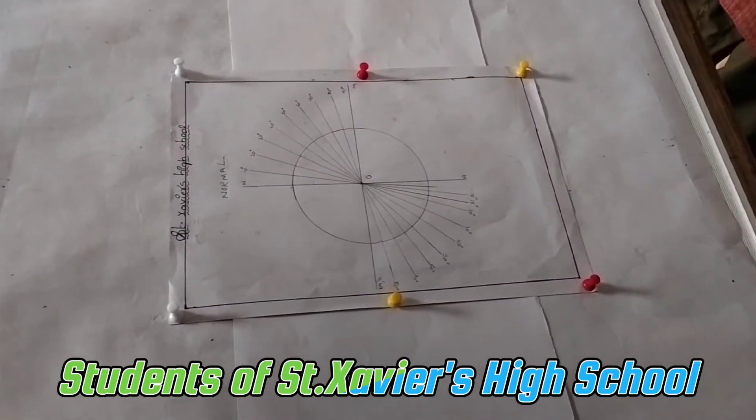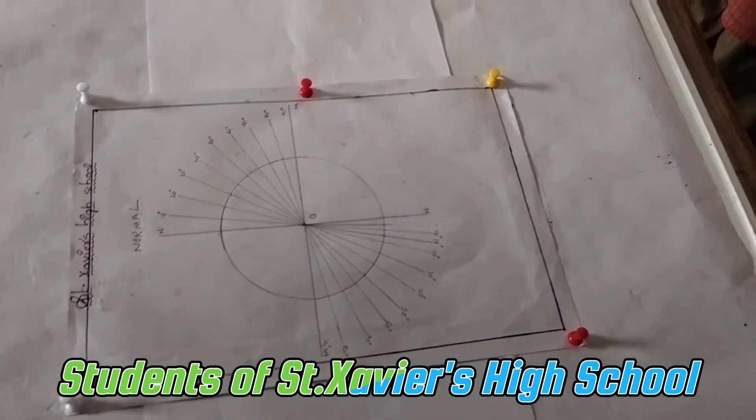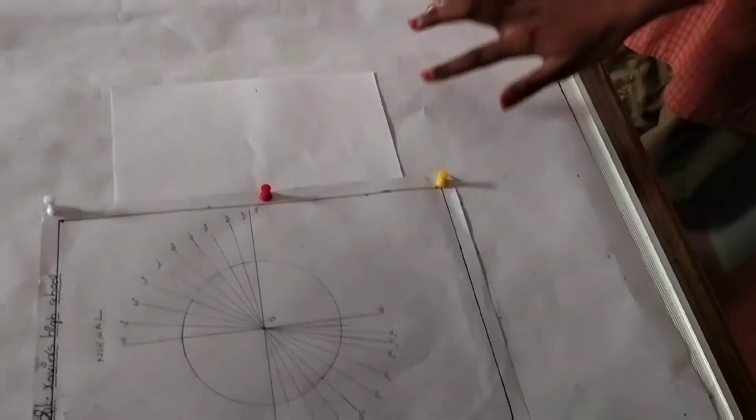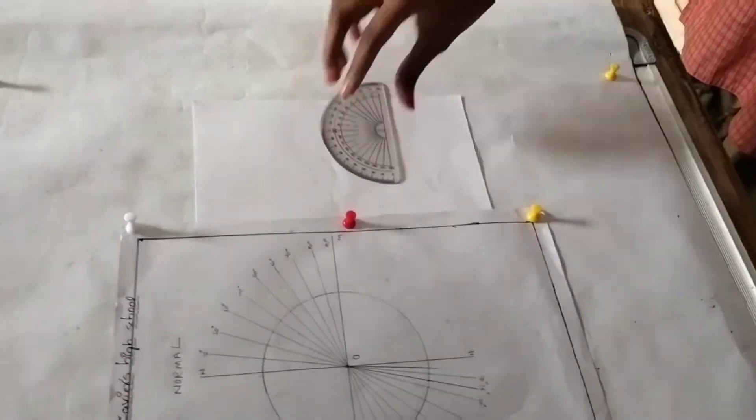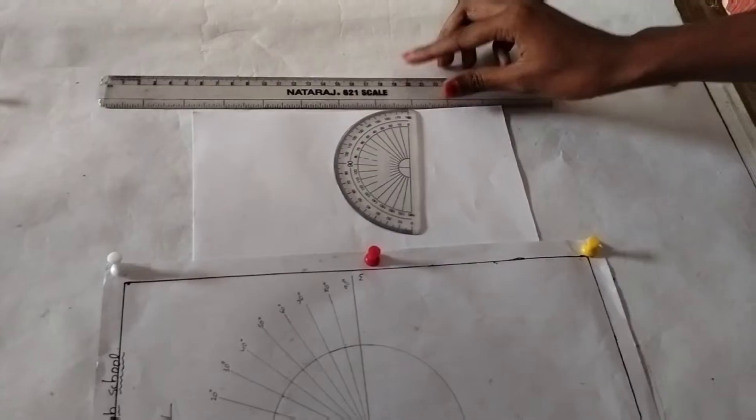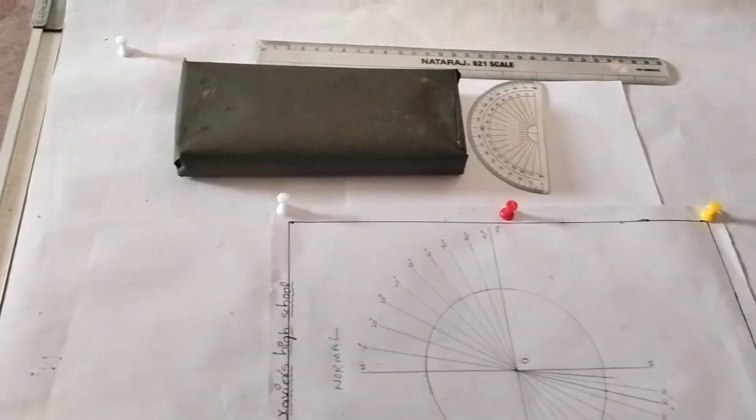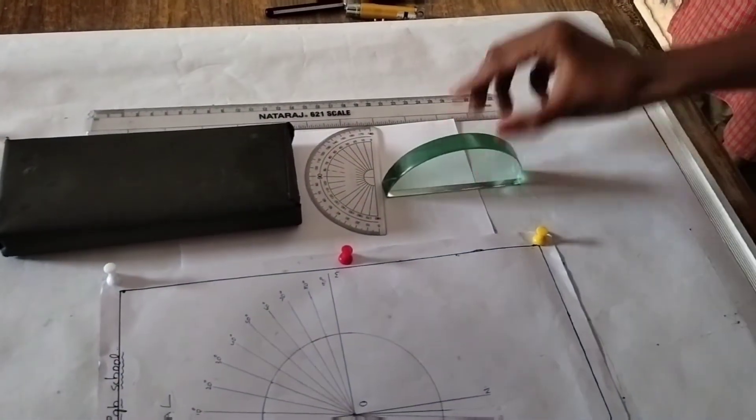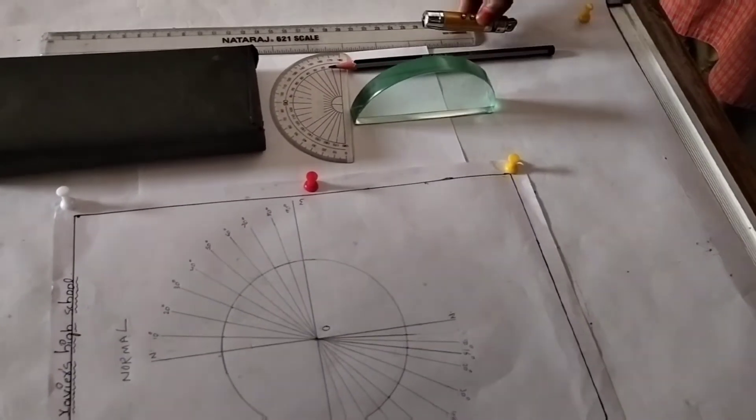A. Obtaining a relation between angle of incidence and angle of refraction. Materials required: a plank, white chart, protractor, scale, small black painted plank, a semicircular glass disc of thickness nearly 2 cm, pencil, and laser light.